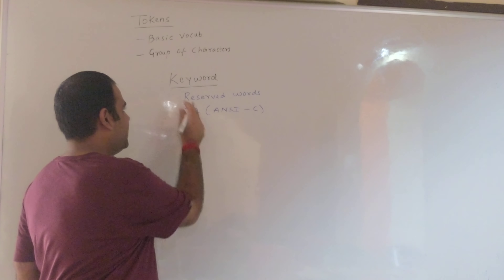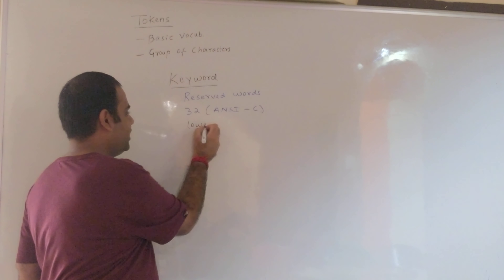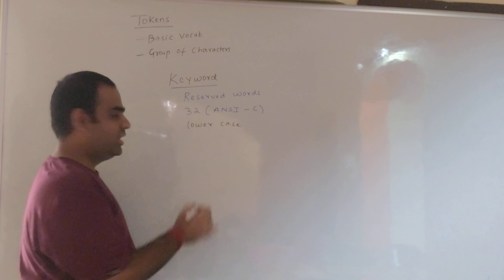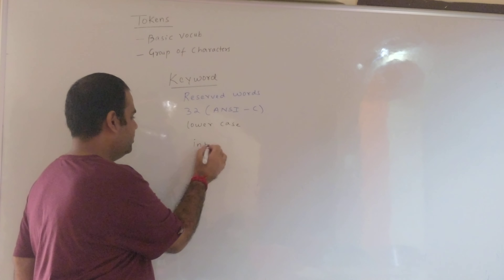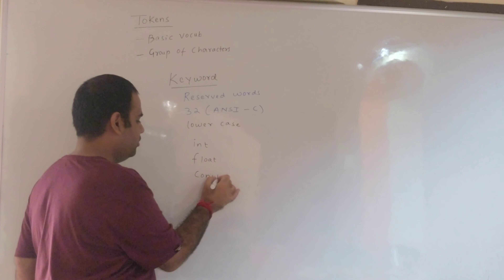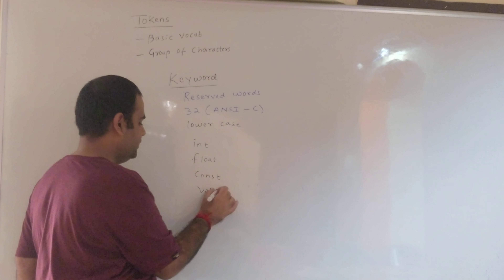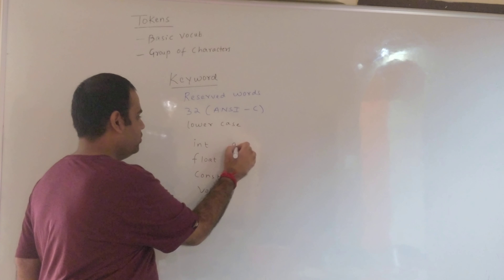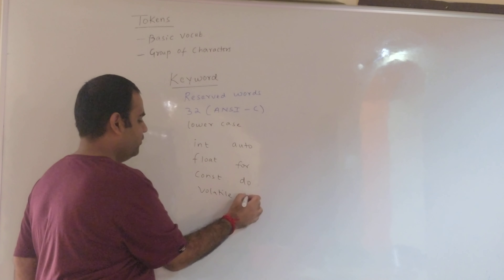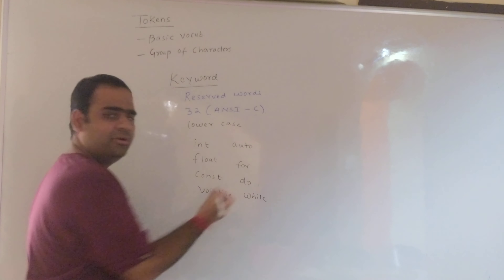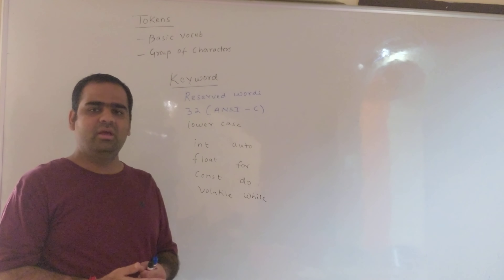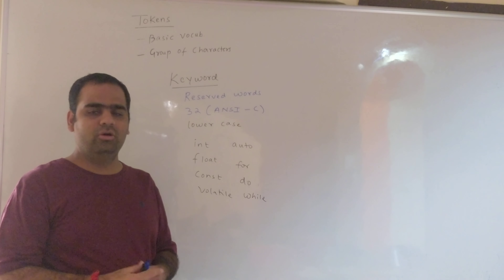All the keywords are written in lowercase. Some of the keywords are: int, float, const, volatile, auto, for, do, while, and so on. There are 32 keywords in total — no need to remember all of them; we will see them as we go along the course.